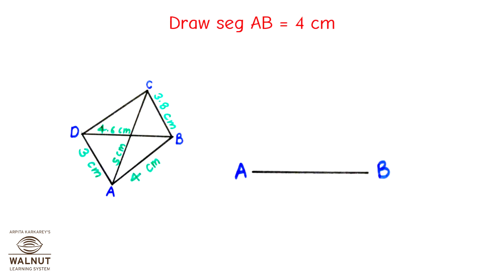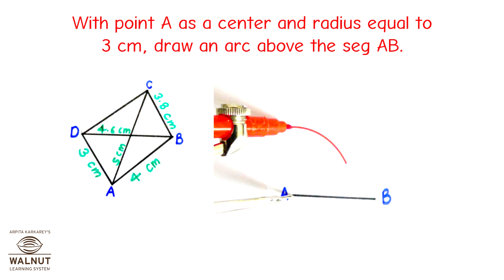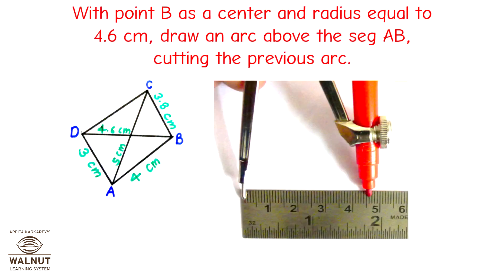Draw segment AB equal to 4 cm. With point A as center and radius equal to 3 cm, draw an arc above segment AB. With point B as center and radius equal to 4.6 cm, draw an arc above segment AB cutting the previous arc.